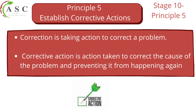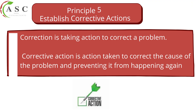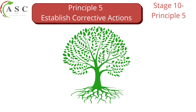Now let's move to principle five — corrective actions. We need to differentiate between a corrective action and a correction. A correction is an immediate fix implemented at that point to ensure the process does not continue making the product unsafe. Normally you would switch off the machine and quarantine the product to determine what went wrong. A corrective action involves investigating and conducting a root cause analysis to establish what the problem is and ensure it doesn't reoccur.